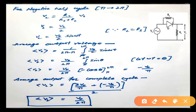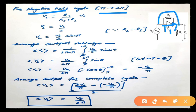For the negative half cycle, from π to 2π, the diode becomes reverse biased. For an ideal diode in reverse bias, it acts as an open circuit, so the source voltage cannot pass through the diode path. Instead, RS and RL are in parallel, giving an equivalent output voltage VL = RL/(RS + RL) × VS. Since RL = RS, this simplifies to VL = VS/2 = (V0/2) sin(ωt).